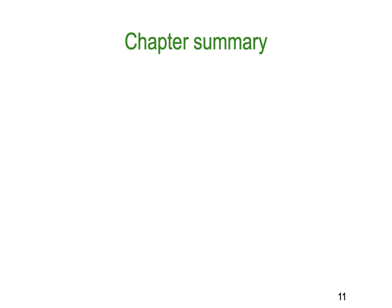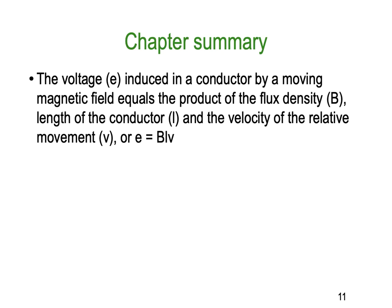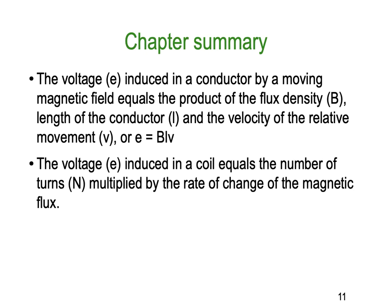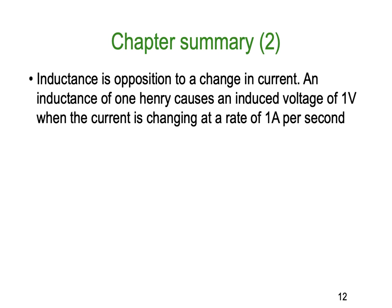Let's summarize what we've learned. The voltage E induced in a conductor by a moving magnetic field equals the product of flux density B, the length of conductor l, and the velocity of relative movement: E = BLV. The voltage E induced in a coil equals the number of turns multiplied by the rate of change of magnetic flux — it's always the rate of change: E = N × (ΔΦ/Δt). Inductance is the opposition to a change in current — the back EMF.